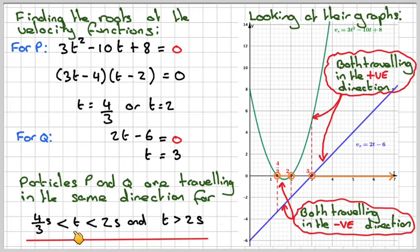So here they're both traveling in the negative direction. Here they are both traveling in the positive direction. Here, for example, this one's positive, and this one will be going in the negative. And then from here, this one will be positive, and this will be going in the negative.